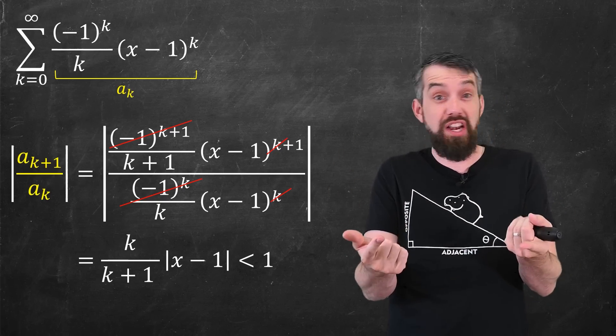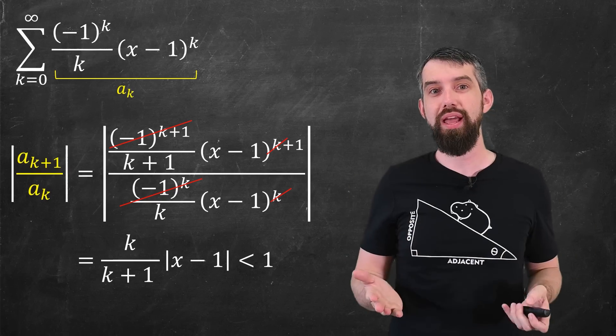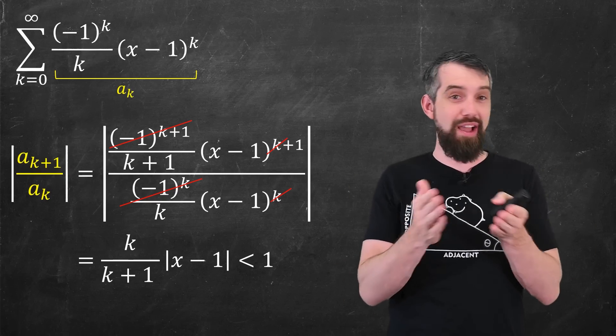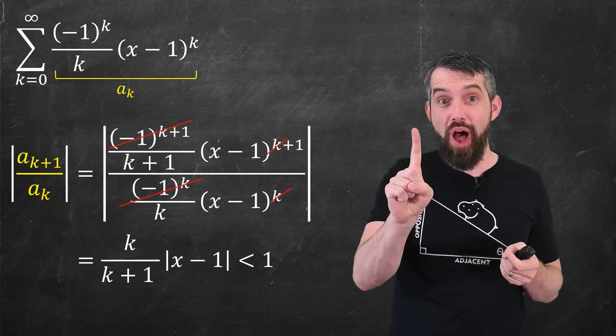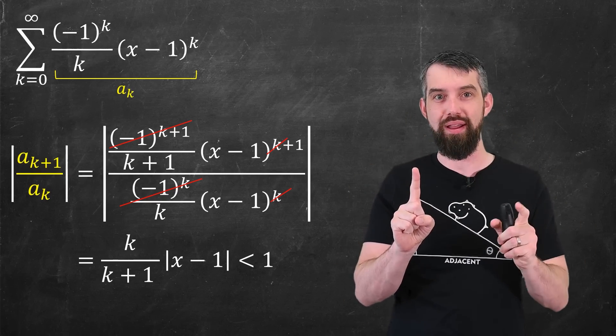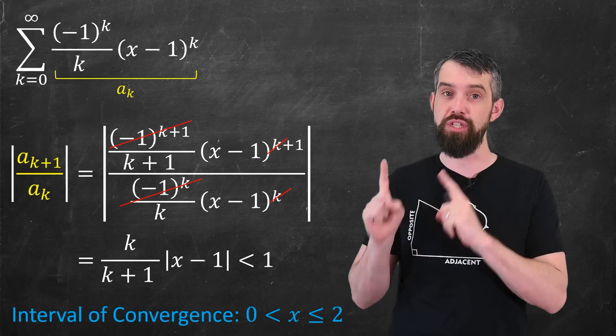In a limit as k goes to infinity, k divided by k plus 1 is just 1. So this is just the demand that my value of x is within 1 of the center of 1. And so I get an interval of convergence of 0 up to 2.